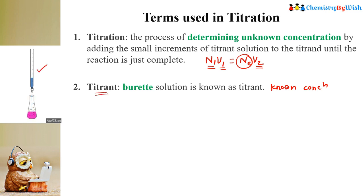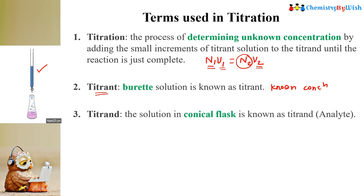The solution present in the conical flask is called the titrand. We have to determine its concentration — it is an unknown concentration solution. The solution present in the conical flask is called the titrand, and it is also called the analyte.